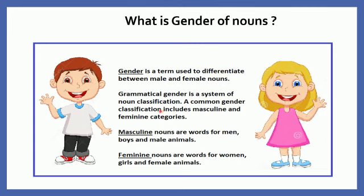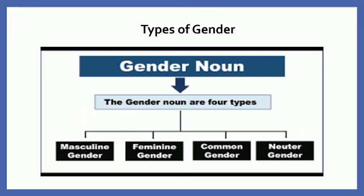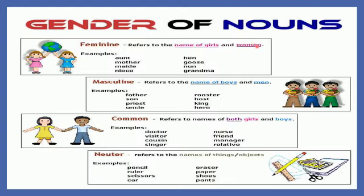A common gender classification includes masculine and feminine categories. Masculine nouns are words for men, boys and male animals. Feminine nouns are words for women, girls and female animals. The gender of nouns are four types: masculine gender, feminine gender, common gender, and neuter gender.